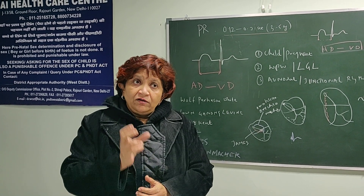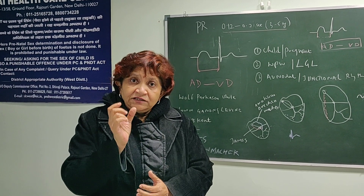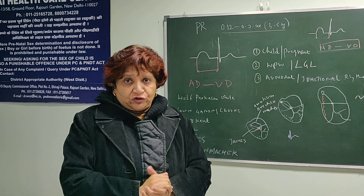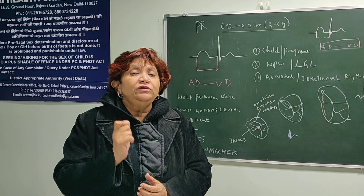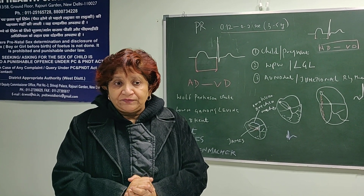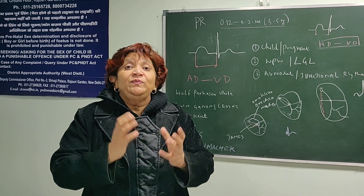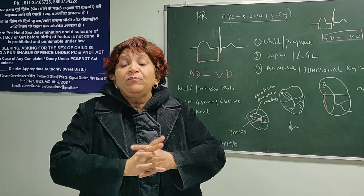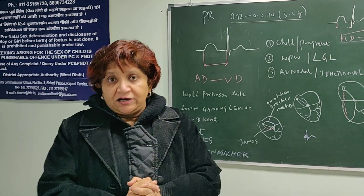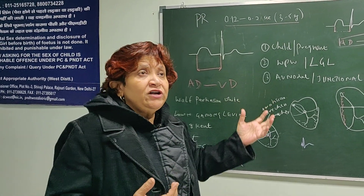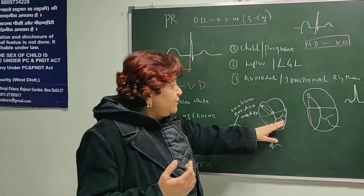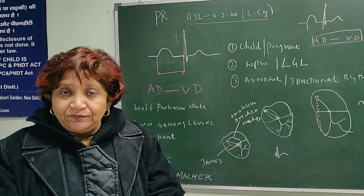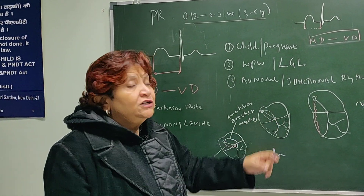When we talk about the PR interval, the maximum time contribution is of the AV node. Because the impulse, when it is passing through the AV node, it is slowed down. This is the quality of AV node — it has a speciality and that speciality is slowing down the impulse. This speciality of AV node is extremely important physiologically for the functioning of the heart. Because otherwise, atrial depolarization passes very fast to ventricular depolarization, and atria and ventricle may contract at the same time, with effective cardiac output being very, very reduced.